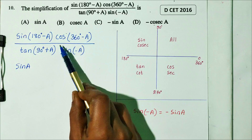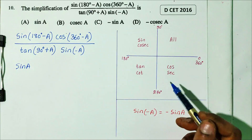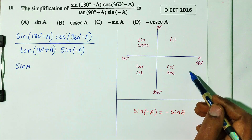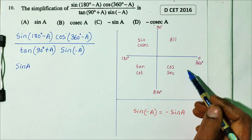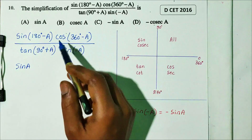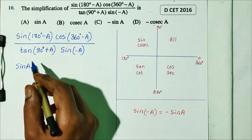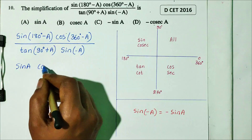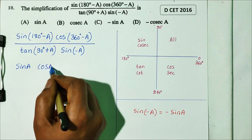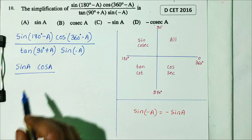Cos(360 minus A): 360 is a full rotation, and cosine is positive in the fourth quadrant. So cos(360 minus A) equals cos A.